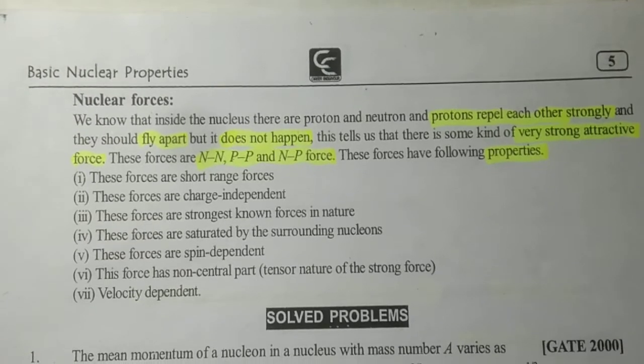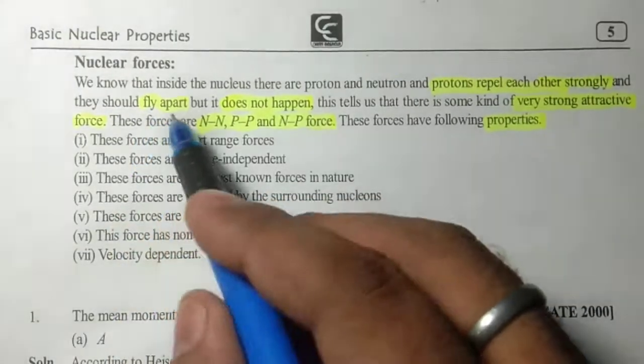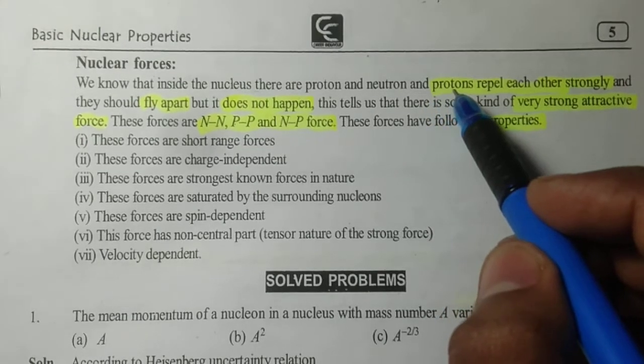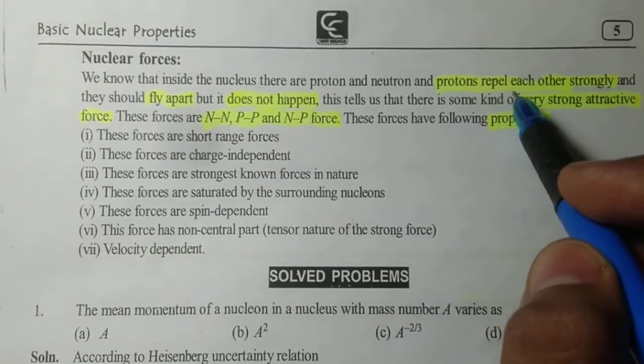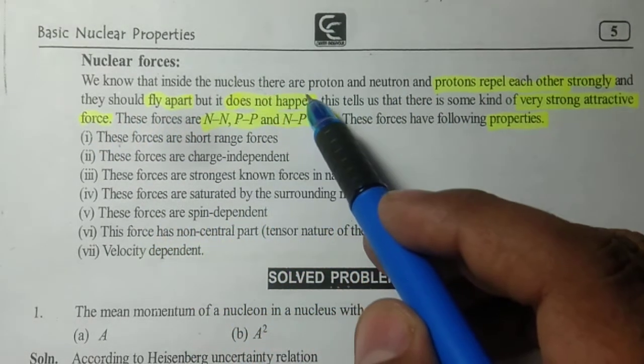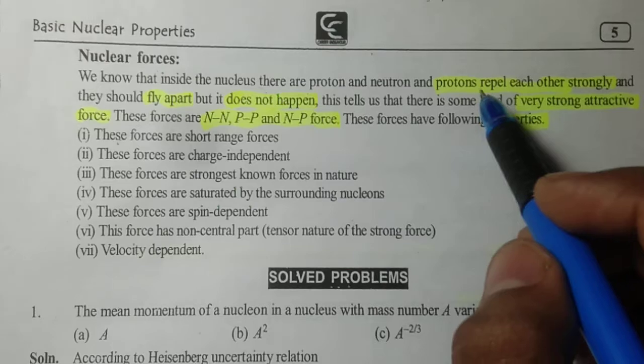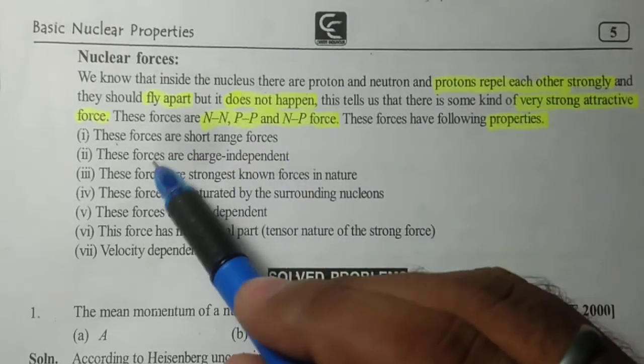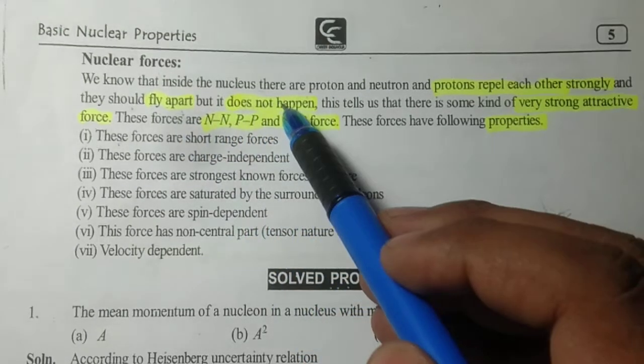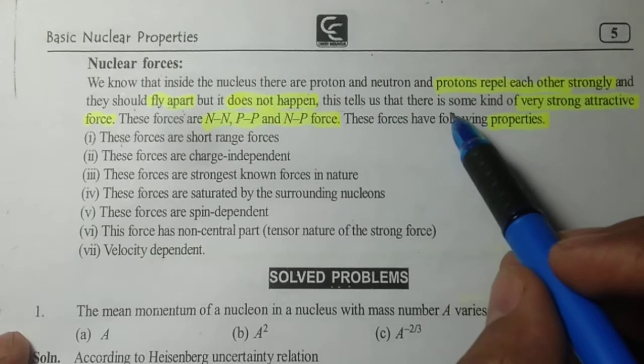Let's start. For nuclear forces, we know that inside the nucleus there are protons and neutrons. Protons repel each other strongly and they should fly apart, but it does not happen. The nucleus can hold the protons and neutrons together even though protons of the same charge should repel.